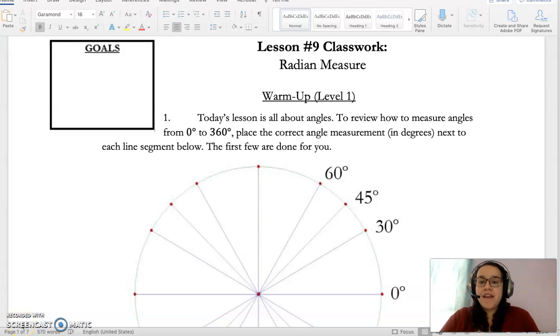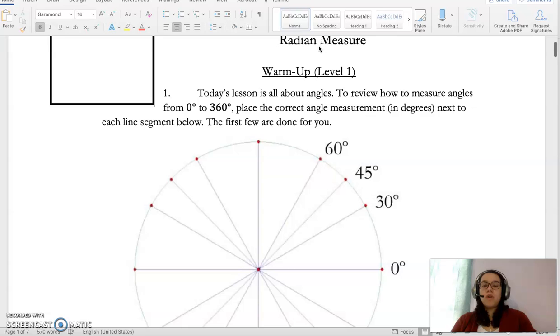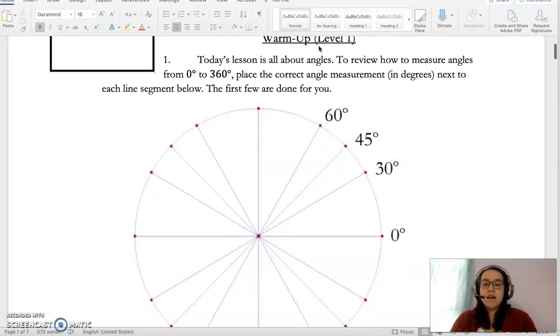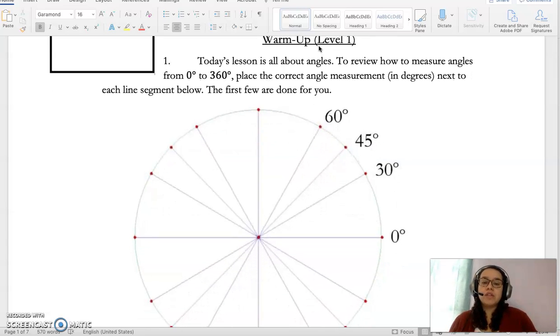Hey guys, Ms. Rivera here. This week for lesson number six, we are doing radian measure. So our warm-up for this week is all about going from degrees to radians. So before we can start, it says today's lesson is all about angles. To review how to measure an angle from 0 to 360, place the correct angle measurement in degrees next to each line segment below. The first few are done for you.